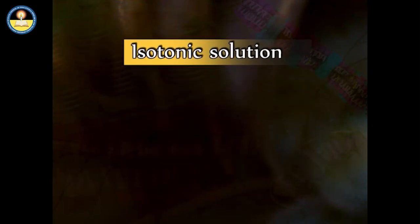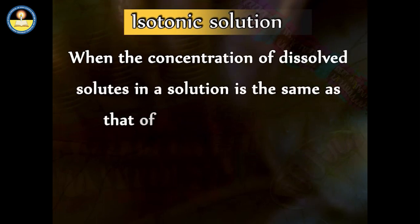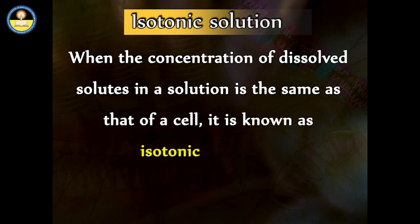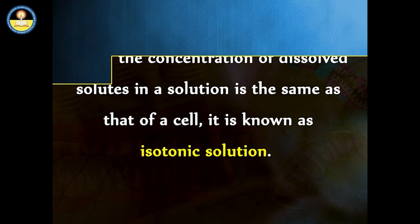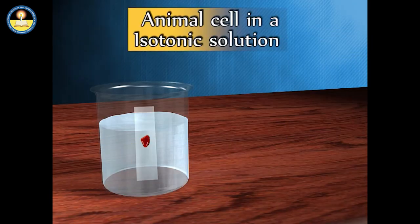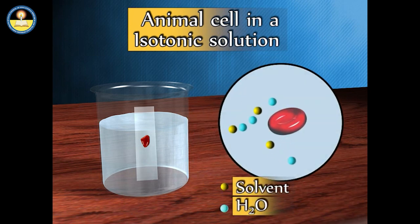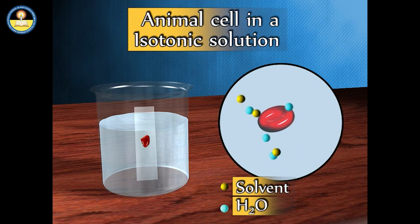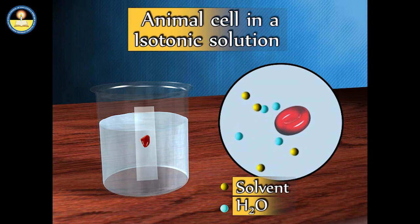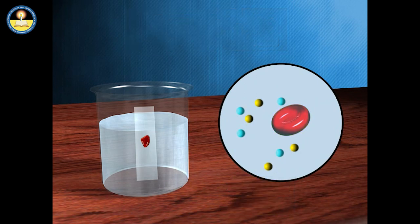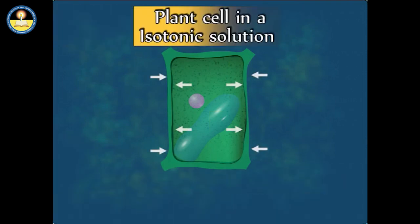When the concentration of dissolved solutes in extracellular fluid is the same as that of a cell, it is known as an isotonic solution. When the concentration is the same inside as well as outside of the cell, the cell is said to be in an isotonic environment. This creates a dynamic equilibrium that maintains the status of the cell — hence, no change takes place in the shape of the cell.